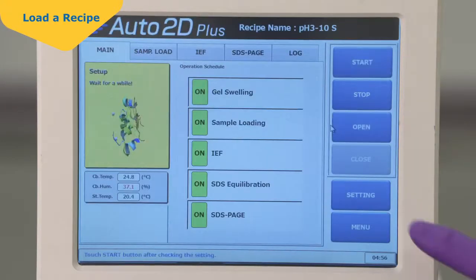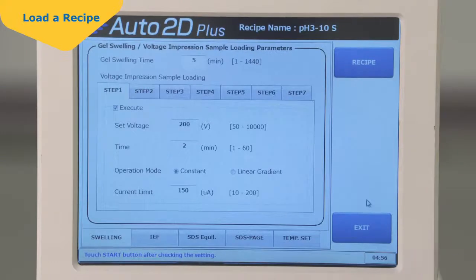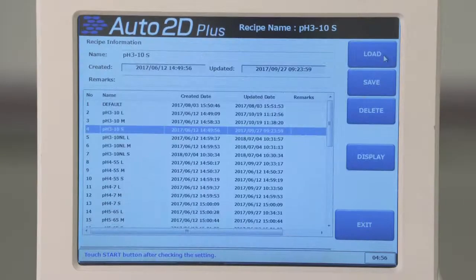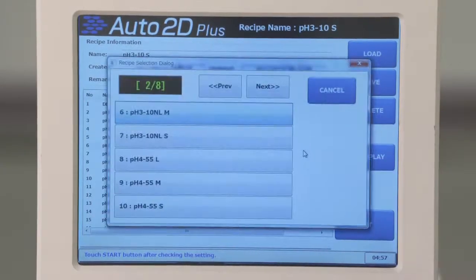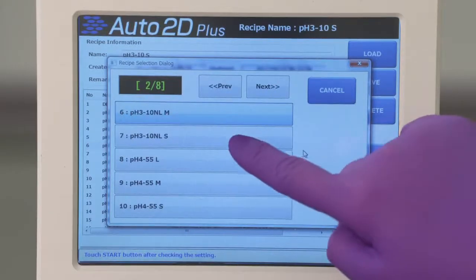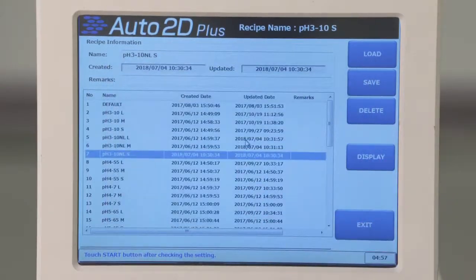You can view standard recipes by touching settings, then recipes. Touch the recipe information screen and a recipe selection box will appear. Select an appropriate recipe for the pH range of your IEF chip. Touch Load to load the recipe.